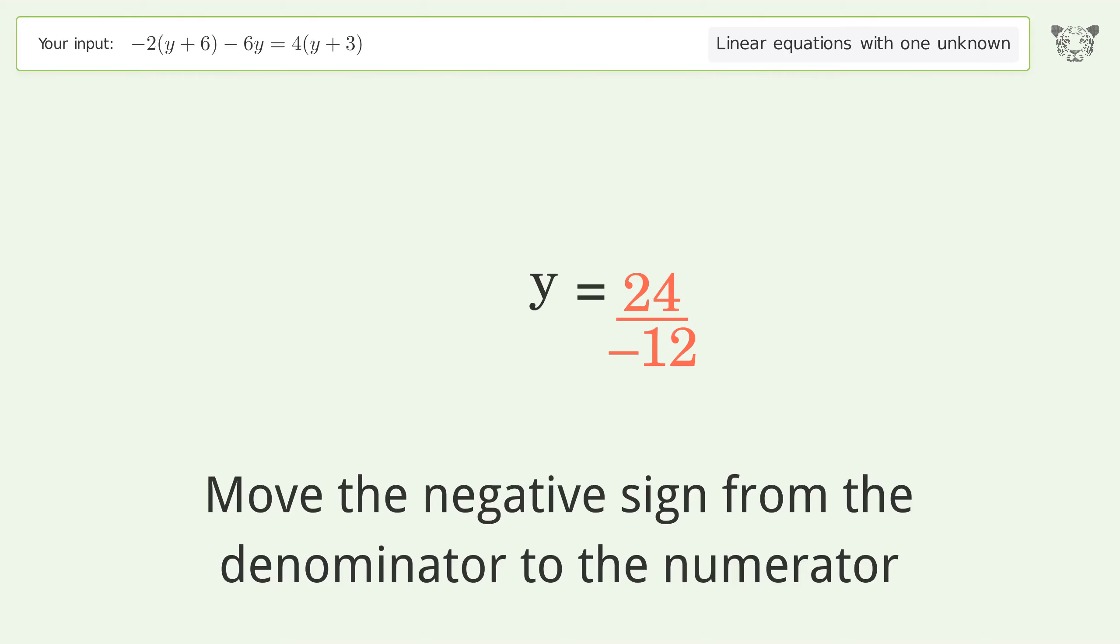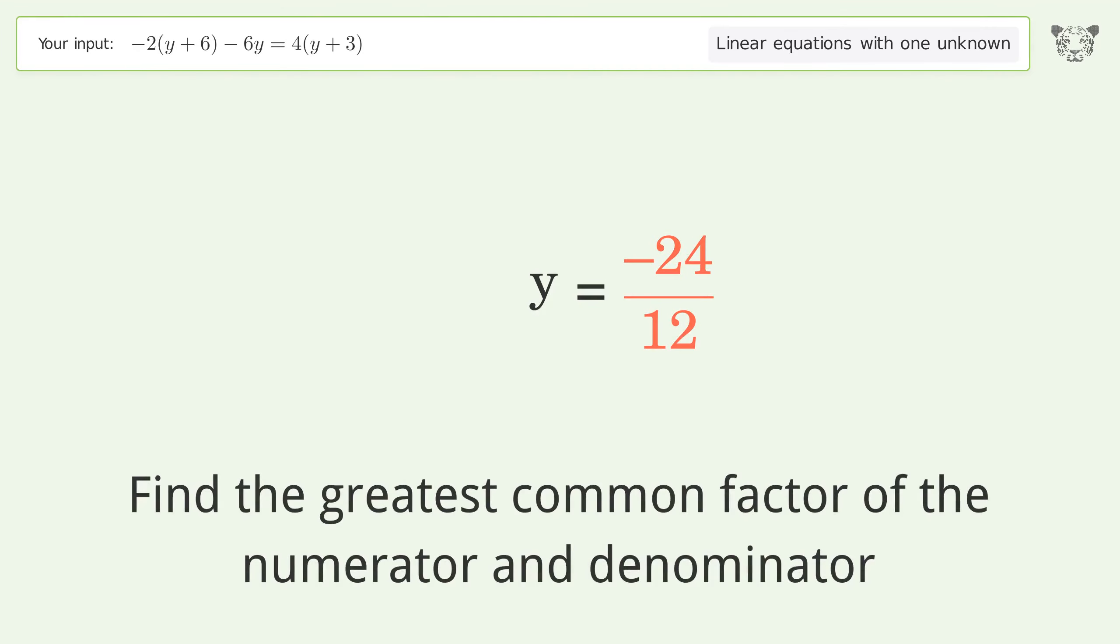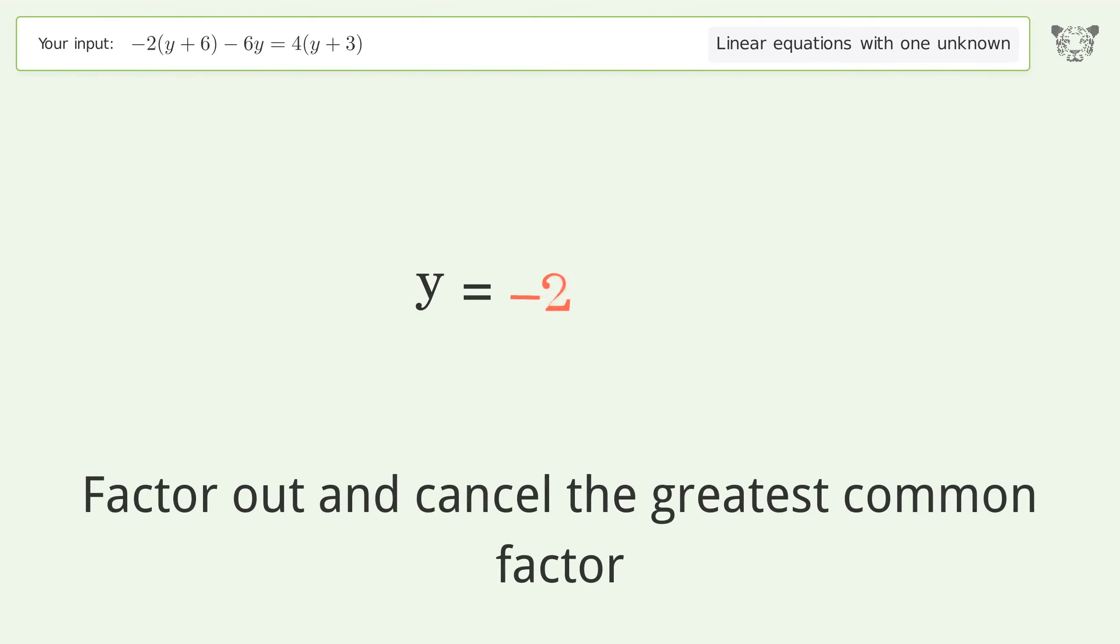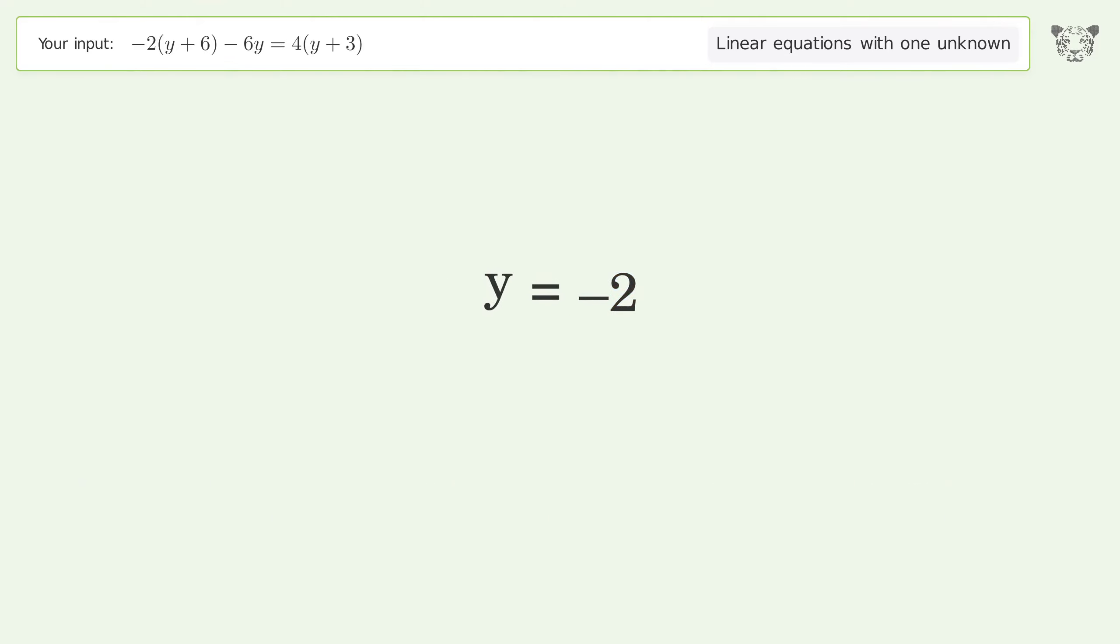Move the negative sign from the denominator to the numerator. Find the greatest common factor of the numerator and denominator. Factor out and cancel the greatest common factor. And so the final result is y equals negative 2.